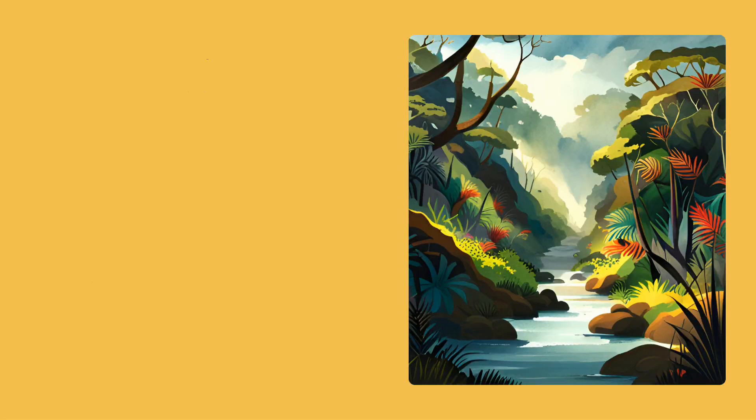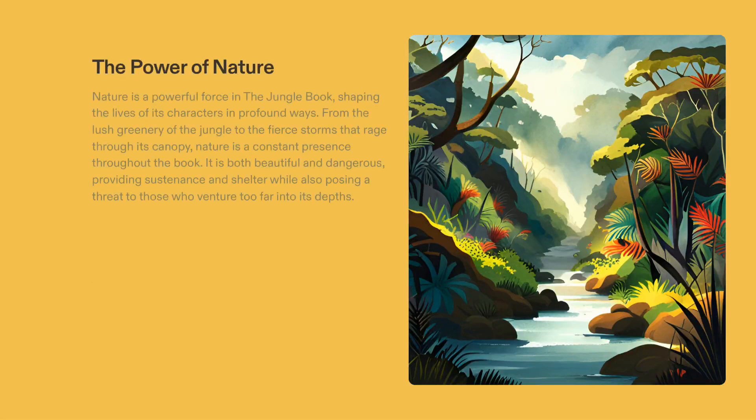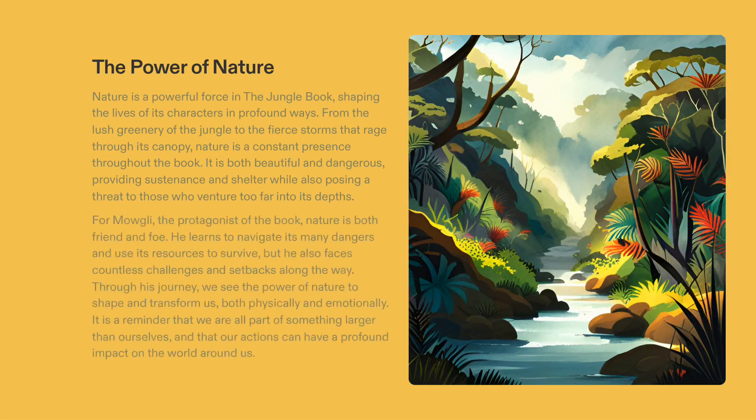In Rudyard Kipling's classic work, The Jungle Book, nature plays an important role throughout. From the lush greenery of the jungle to the fierce storms that rage through its canopy, nature is a constant presence and a powerful force that shapes the lives of its characters in profound ways. For Mowgli, the protagonist of the book, nature is both friend and foe. He learns to use its resources in order to survive and navigates its many dangers, but also faces challenges and setbacks along the way. Through Mowgli's journey, we come to understand the power of nature to shape and transform us, both physically and emotionally. It's a reminder of our connection to something greater and our ability to have a profound impact on the world around us.